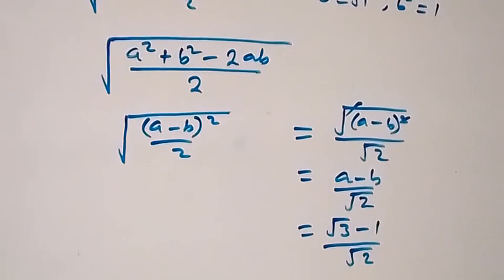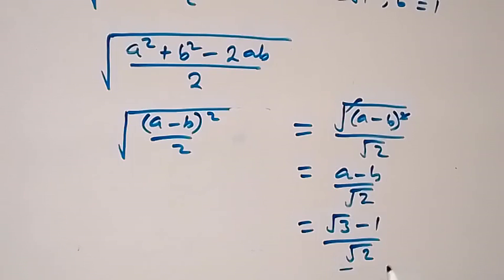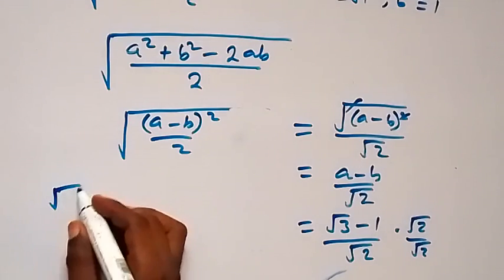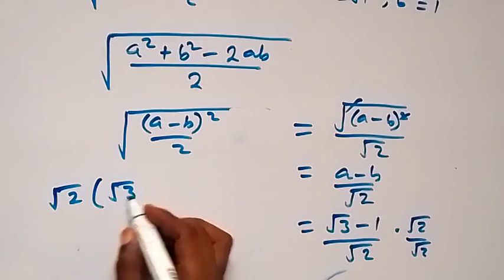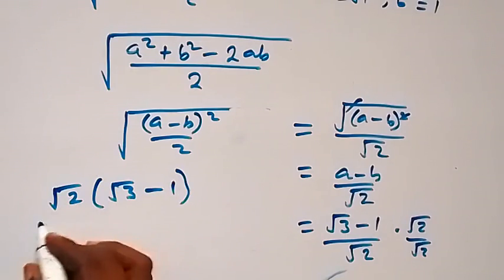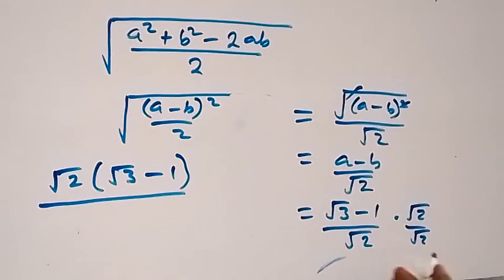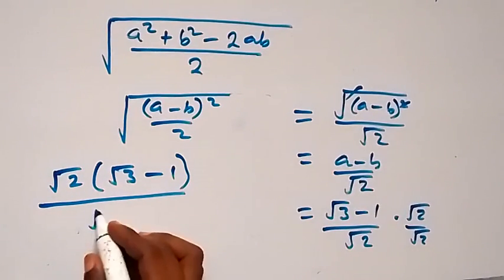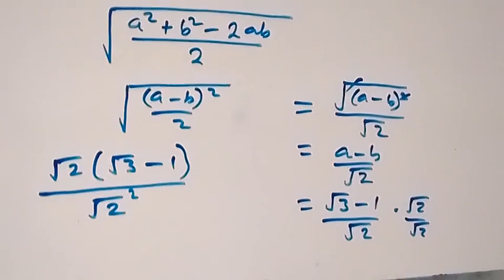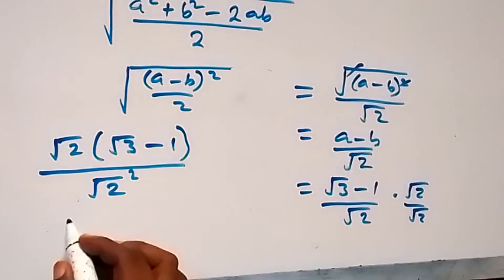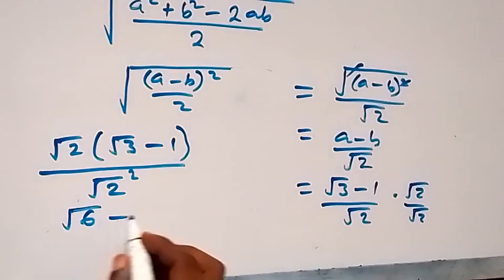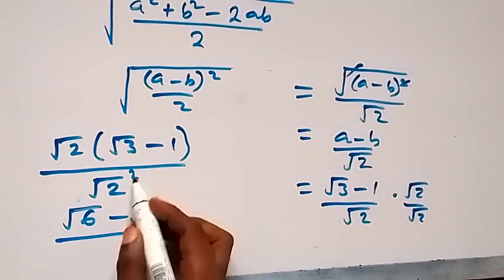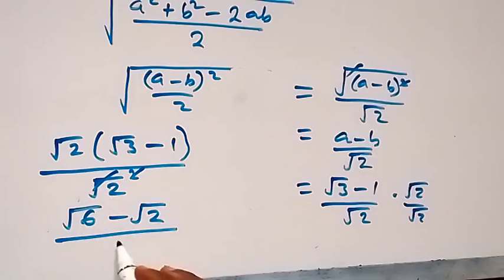Then here we can, of course, rationalize this and multiply by root 2, then divided by root 2. So root 2 we multiply here. And then we have root 2 into bracket root 3 minus 1, then divided by root 2 we multiply root 2, that's root 2 squared. Then here, when we open this bracket, this gives us root 6 minus root 2, then divided by root 2 squared. Squared cancel square root and this is 2. So we have root 6 minus root 2 over 2.